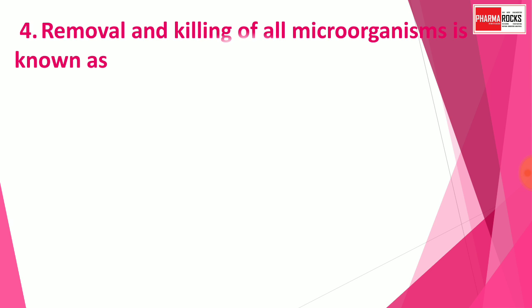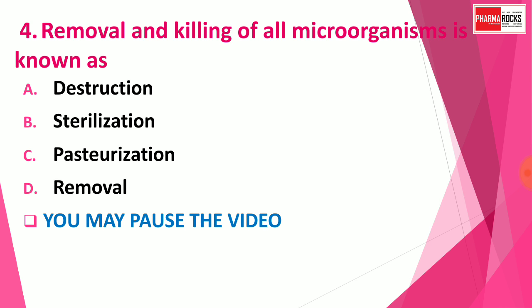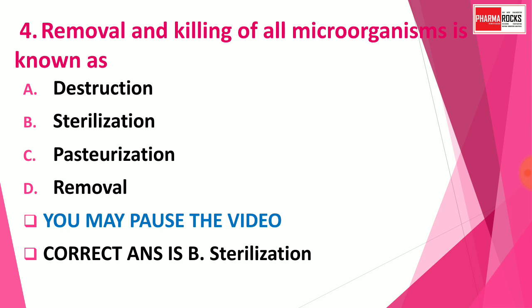Question number 4. Removal and killing of all microorganisms is known as — Option A: Destruction, Option B: Sterilization, Option C: Pasteurization, and Option D: Removal. You may pause the video to think about the correct answer. The correct answer is Option B, Sterilization. So removal and killing of all microorganisms is known as sterilization.